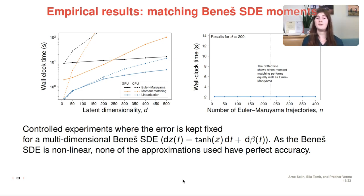And then we also did a deep dive to dimension 200 to see how does the number of Euler-Maruyama trajectories impact runtime. So for reference, here you see the linearization, the moment matching method, and finally Euler-Maruyama and looks like it's around 14 seconds at 400 trajectories and around 9 seconds for 50 trajectories. Next, Prakar will go through some experimental details.